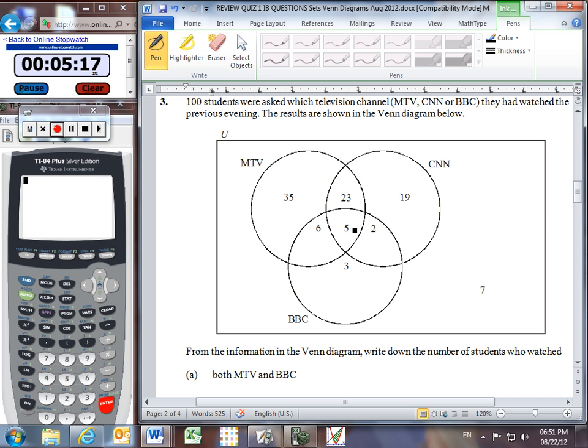So from the information in the Venn diagram, write down the number of students who watched both MTV and BBC. So we're looking for the overlapping region between MTV and BBC, and we can see that that's going to be this region right here. Now you might be wondering, do I include only the six or the six and the five? And you have to include the six and the five, because the question doesn't tell you that these students definitely do not watch CNN. And so we have a total of eleven students who watch MTV and BBC. It so turns out that five of those eleven also watch CNN. But that's kind of irrelevant to this particular question. There's a total of eleven who watch these two channels.